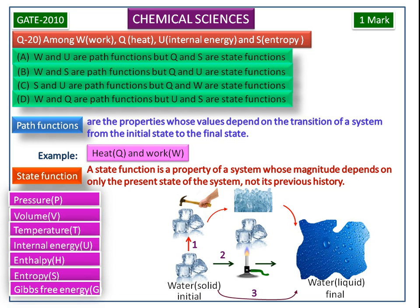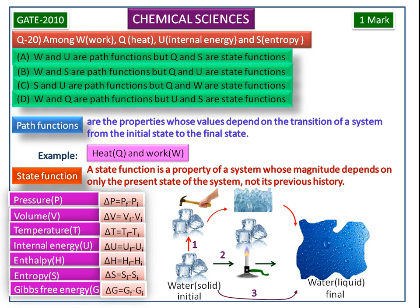Path functions depend upon the history of the system, while state functions depend on the magnitude of the present state of the system. Among work, heat, internal energy and entropy — work and heat are path functions, but internal energy and entropy, that is, U and S, are state functions. So the correct answer is D.